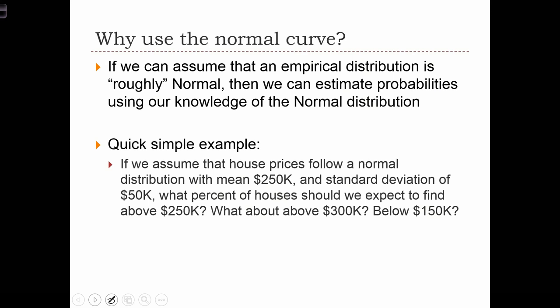Why do we like the normal curve? The reason is if we can assume that an empirical distribution has roughly the same shape as a normal distribution, then we can estimate probabilities using our knowledge of the normal distribution. For example, if we can assume that house prices follow a normal distribution with a mean of $250,000 and a standard deviation of $50,000,